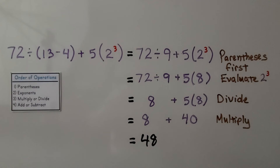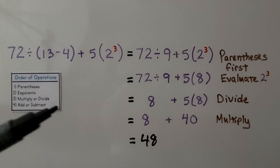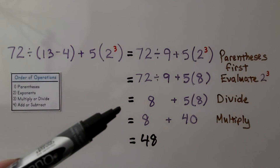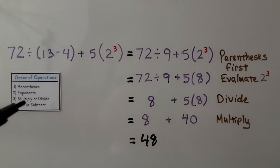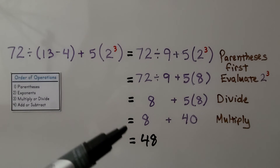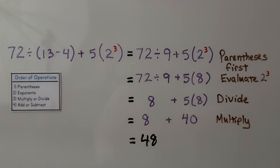Remember, for multiply or divide, it's from left to right, whichever comes first. And for add or subtract, it's also from left to right, whichever comes first.